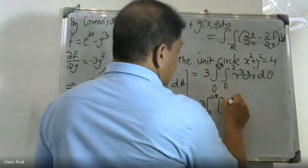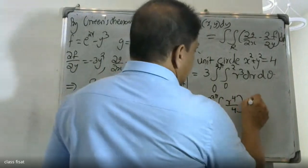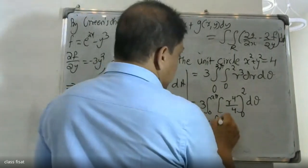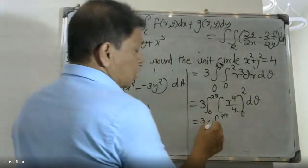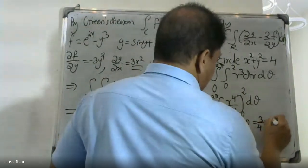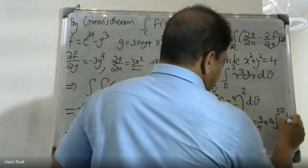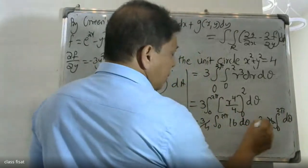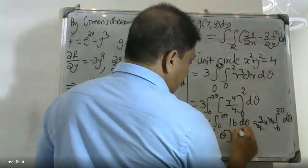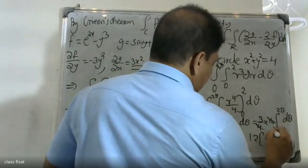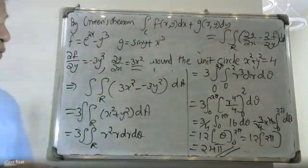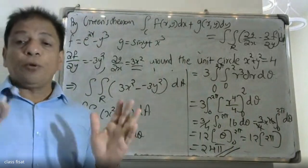Therefore, integrating, we get 3 times the integral from 0 to 2π dθ times the integral from 0 to 2 of r³ dr. Evaluating gives 3 by 4, with limits 0 to 2. The answer is 24π. So the work done is 24π. The problem is worked out.